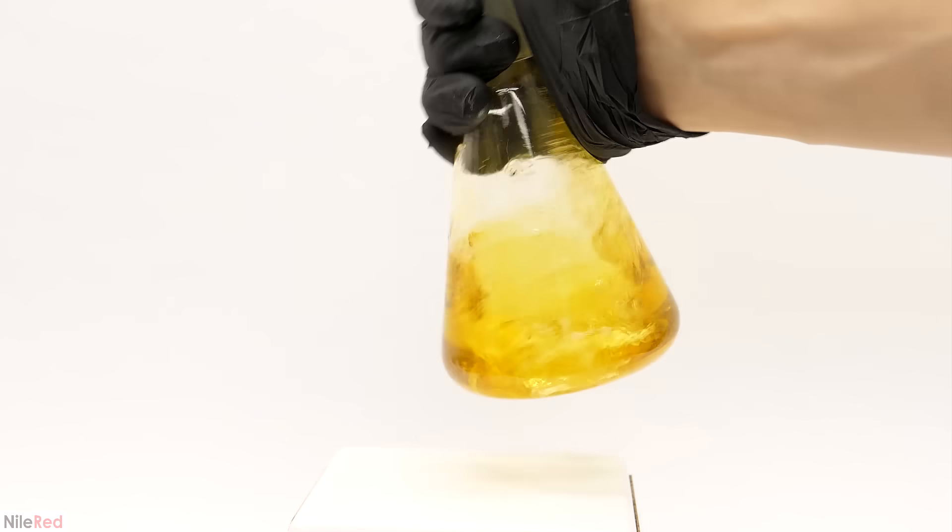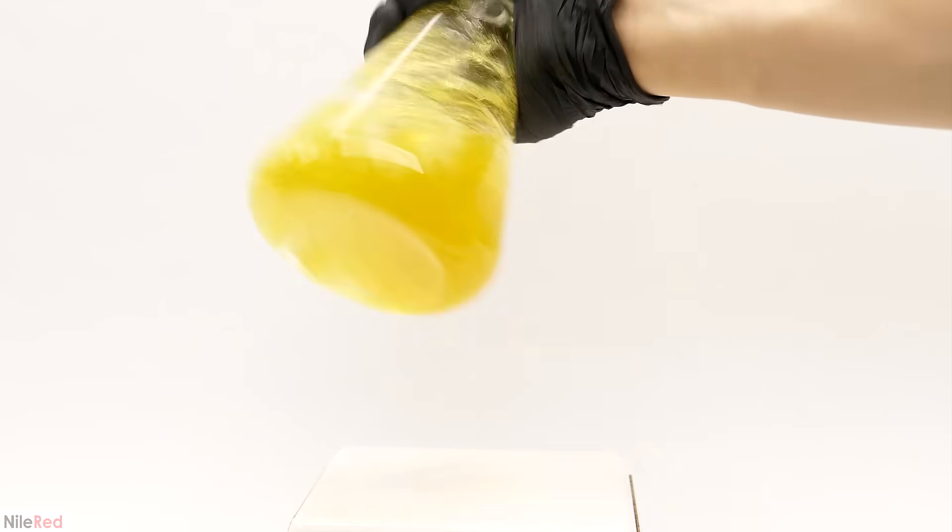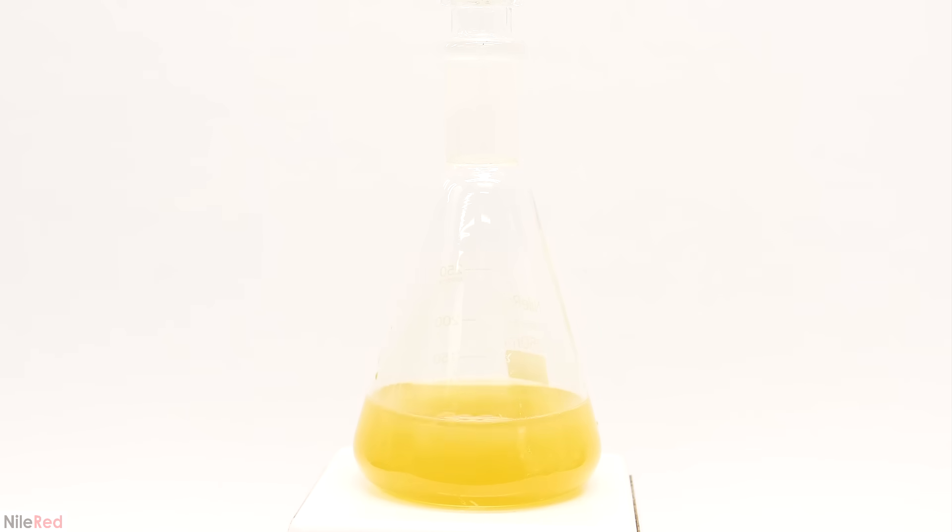If this were true then adding more base would shift more of it to the yellow form and it would ruin the color change. So to test this out I used a huge excess of the base and it did end up ruining it. This result definitely supports my theory but I think there needs to be a bit more work done to conclusively say anything.